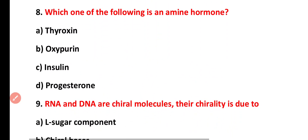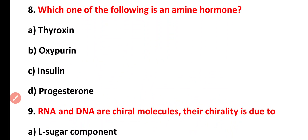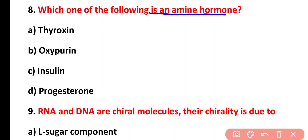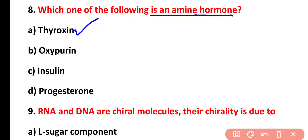Question eight: which of the following is an amine hormone? Options: thyroxine, oxytocin, insulin, progesterone. The correct answer is option A. Thyroxine is an amino acid derivative hormone produced by the thyroid gland.